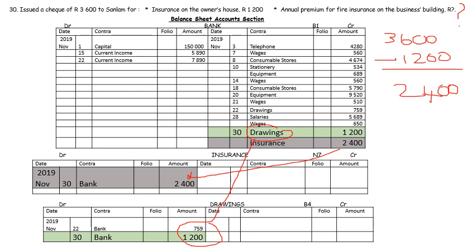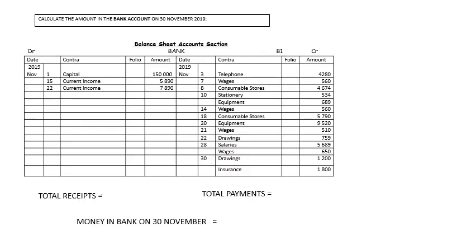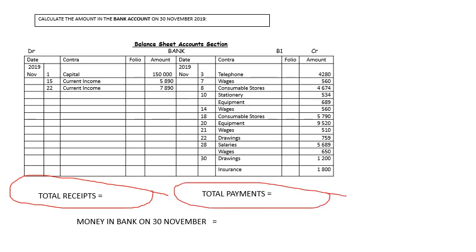That is the exercise. Now for the next two slides, I am not going to give you the answers. For the first one, they ask you to calculate what is the amount in the bank account. Here is a clue: if you want to know what is left in the bank account, you first have to calculate your total receipts, then your total payments. Can you then get the money that is left in the bank? That is your homework for next time.